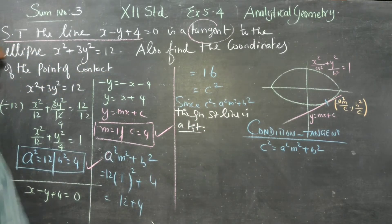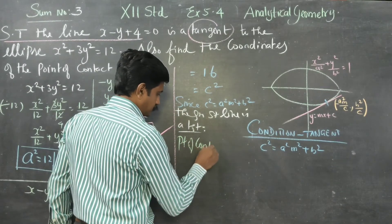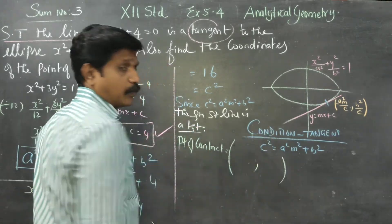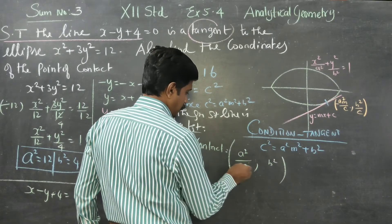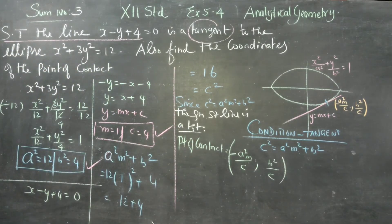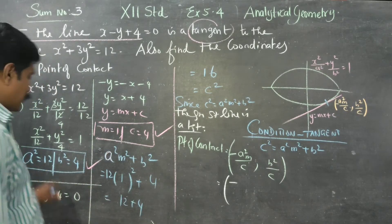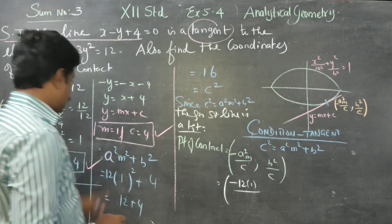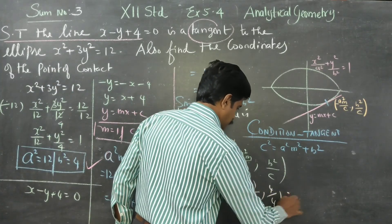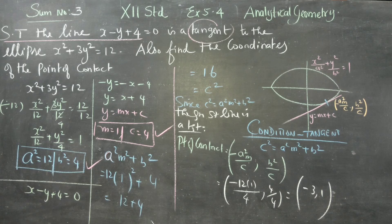Now we want the point of contact. The point of contact is (-a²m/c, b²/c). Substituting: a² = 12, m = 1, c = 4, b² = 4. This gives (-12×1/4, 4/4), which simplifies to (-3, 1). This is the point of contact of the tangent with the ellipse.